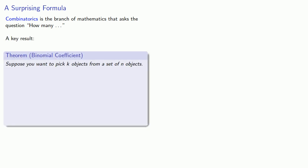This leads us to a new branch of mathematics known as combinatorics. Combinatorics is the branch of mathematics that asks the question, how many? A key result in combinatorics is the binomial coefficient. Suppose you want to pick k objects from a set of n objects. The number of ways you can do this is given by a formula. We read this as n choose k, and we compute it by the formula on the right, where the exclamation point is read factorial. So this is n factorial, where m factorial is the product of the whole numbers from 1 to m. Every now and then we'll have to deal with 0 factorial, which is defined to be 1.